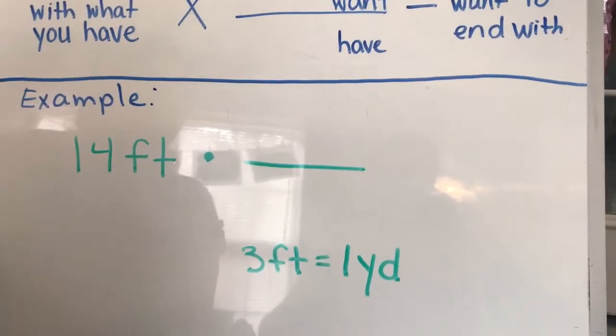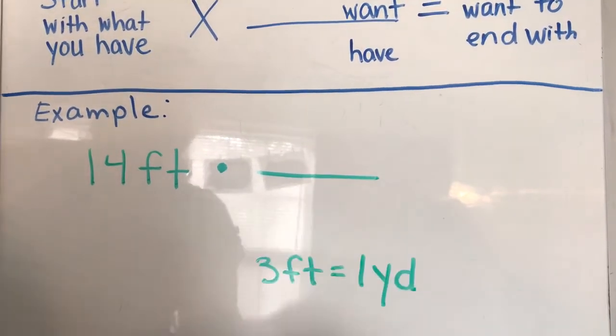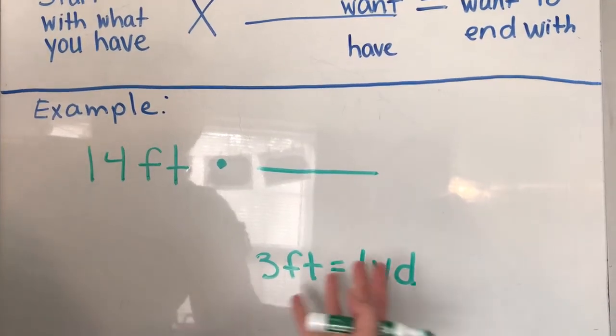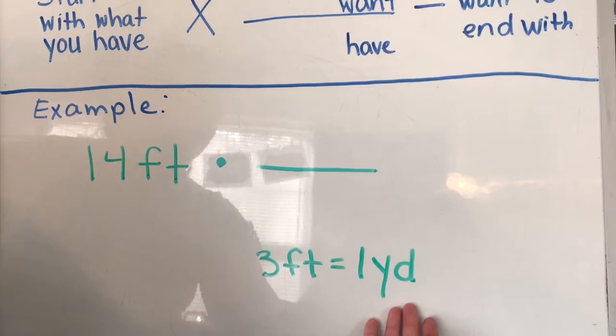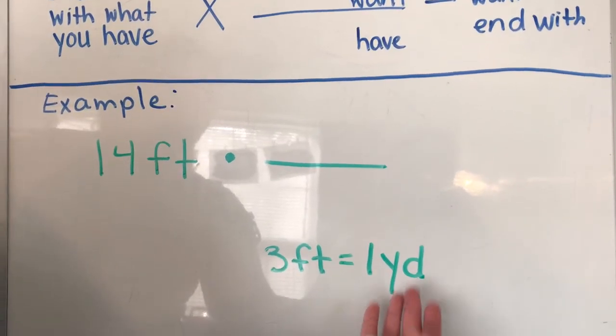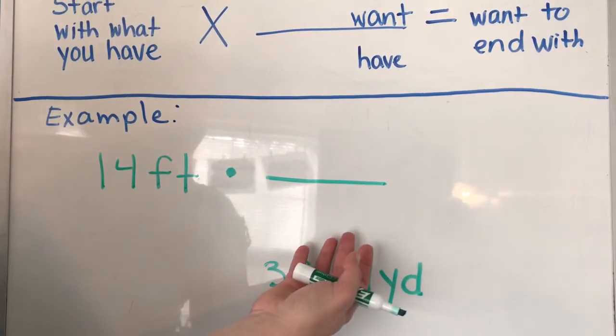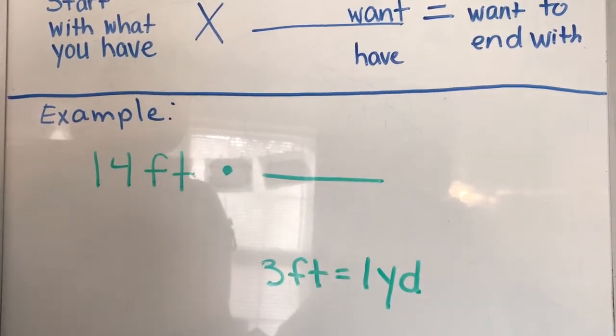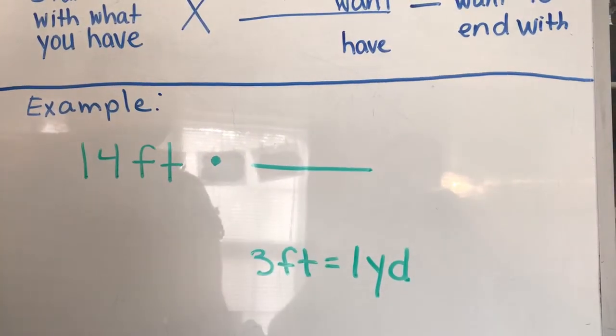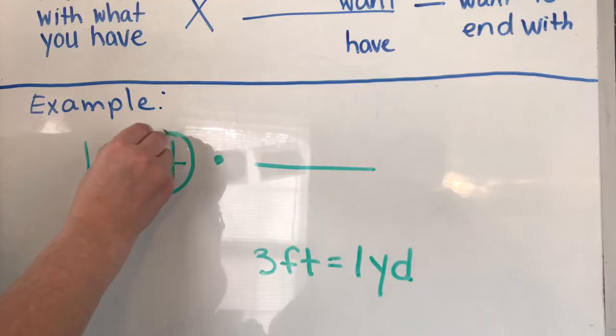But we're going to say do we put the feet on top or do we put the yards on top? These are equal to each other. So if you understand that 3 feet is the same thing as 1 yard, you'll understand 1 over 1 is still 1. 1 yard over 3 feet is the same thing as 3 feet over 1 yard. Which we pick to go on top and which we pick to go on bottom is going to depend upon what we want to cancel out.